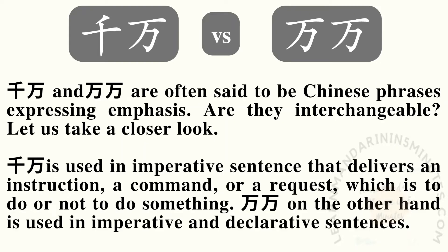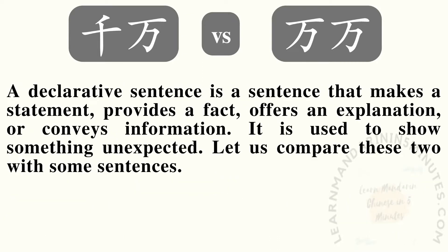千万 and 万万 are often said to be Chinese phrases expressing emphasis. Are they interchangeable? Let us take a closer look. 千万 is used in imperative sentences that deliver an instruction, a command, or a request to someone not to do or to do something. 万万, on the other hand, is used in both imperative and declarative sentences. A declarative sentence makes a statement, provides a fact, offers an explanation, or conveys information. It is used to show something unexpected. Let us compare these two with some sentences.